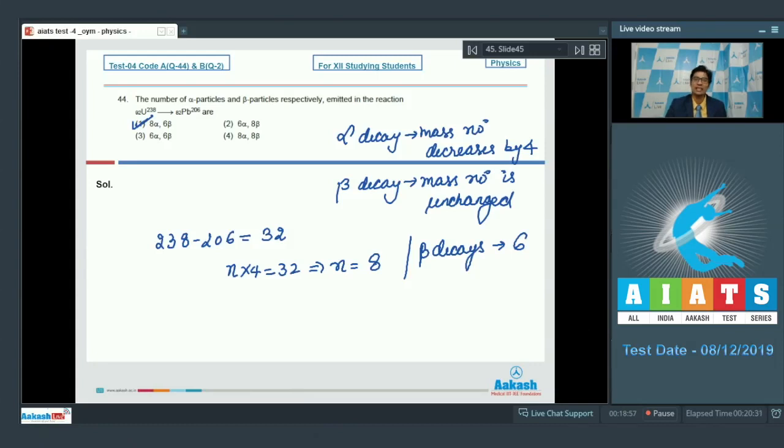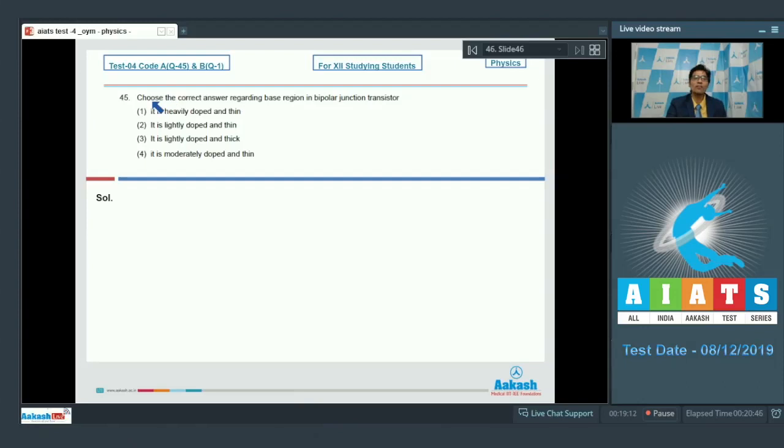Let us proceed to question number 45. Question number 45 says, choose the correct answer regarding base region in bipolar junction transistor. The base region in bipolar junction transistor is lightly doped and thin. It is a fairly theoretical question and the correct answer for this question is option number 2.